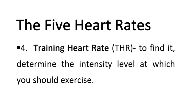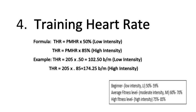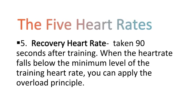Number four — Training Heart Rate (THR): to find it, determine the intensity level at which you should exercise. Formula: THR equals PMHR multiplied by 50% for low intensity; THR equals PMHR multiplied by 85% for high intensity. Number five — Recovery Heart Rate: taken 90 seconds after training. When the heart rate falls below the minimum level of the training heart rate, you can apply the overload principle.